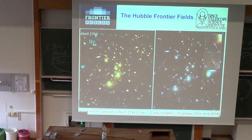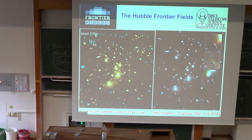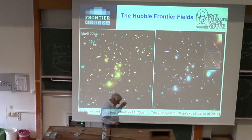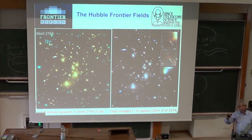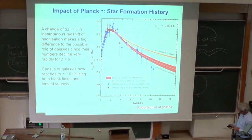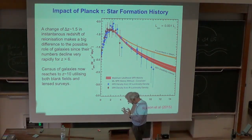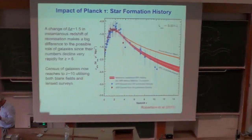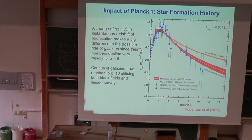The second technique is gravitational lensing — pointing Hubble toward a rich cluster of galaxies, which acts as a magnifying system that boosts the brightness of distant intrinsically faint background galaxies. In many cases these background galaxies appear as multiple images, providing valuable distance information. The good news is that these two very different techniques — blank-field imaging and cluster lensing — give similar results for the abundance of galaxies as a function of redshift.